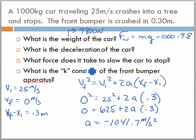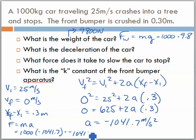Next question here is, what force does it take to slow the car to stop? Well, I have the acceleration of the car. We know the mass of the car is 1,000 kilograms. So to find that force, I would take 1,000 times that acceleration of negative 1,041.7. And we get an answer then of negative 1,041,700 newtons. And it's negative, meaning that force was in the opposite direction that the vehicle was moving.